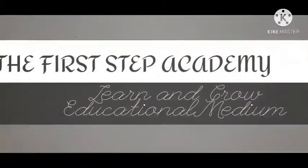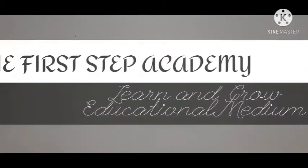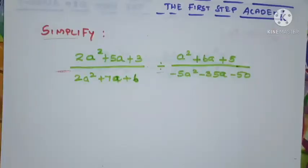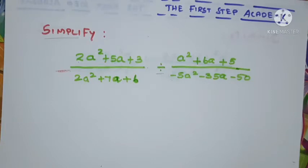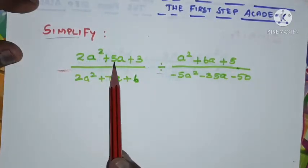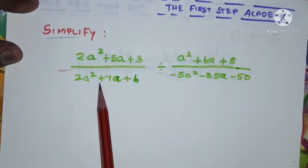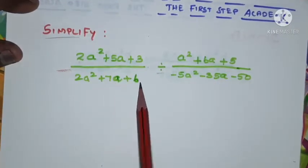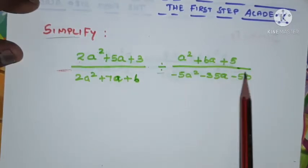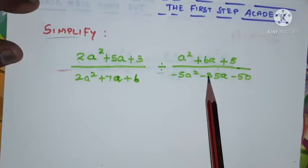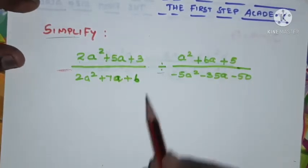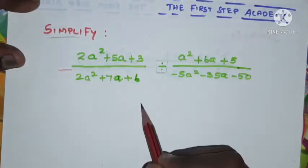Hi, hello, welcome to the First Step Academy Learn and Grow Educational Medium. The given problem is: simplify 2a squared plus 5a plus 3 by 2a squared plus 7a plus 6, divided by a squared plus 6a plus 5 by minus 5a squared minus 35a minus 50. Look at the operation here — the operation is division.